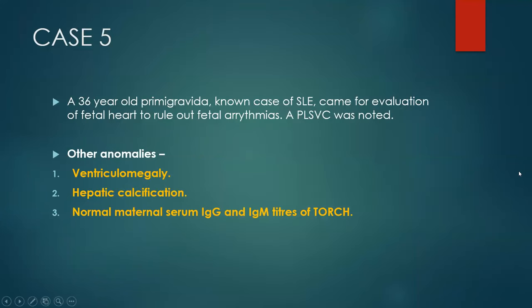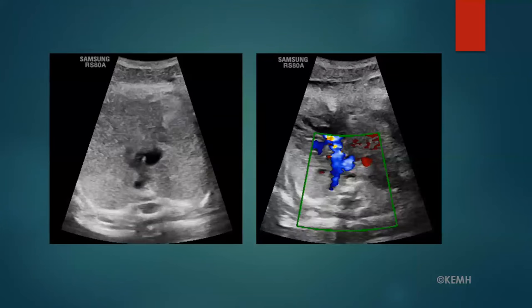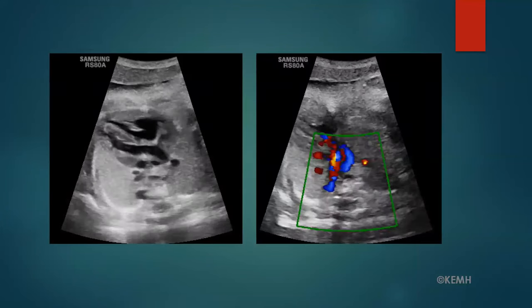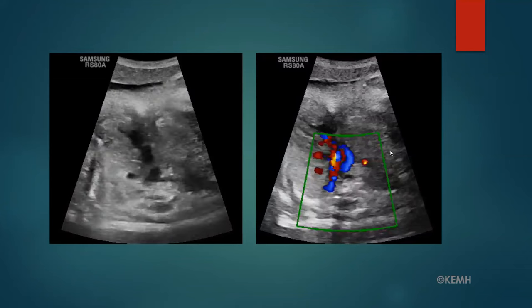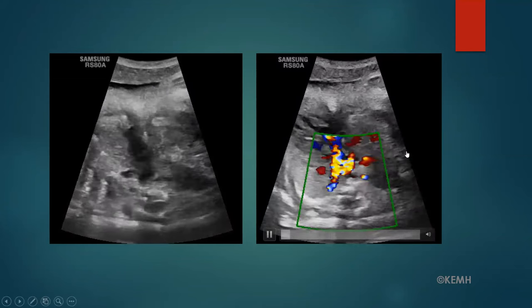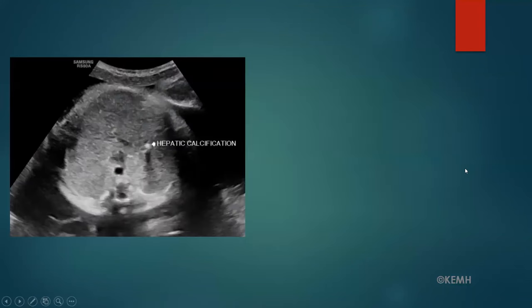Case 5 was an elderly primigravida known to have SLE. PLSVC was noted along with ventriculomegaly with normal spine, and hepatic coarse calcification with normal maternal titers. A video shows persistent left SVC along with these two findings.